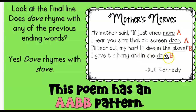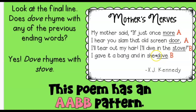We're going to get that last line. We have more and door as AA. We already put B to stove. And we're going to look at the last word: dove. They rhyme, right? So that's why we're going to put it a B. So this poem has an A, A, B, B pattern. Remember, the first poem was an A, B, A, B pattern.